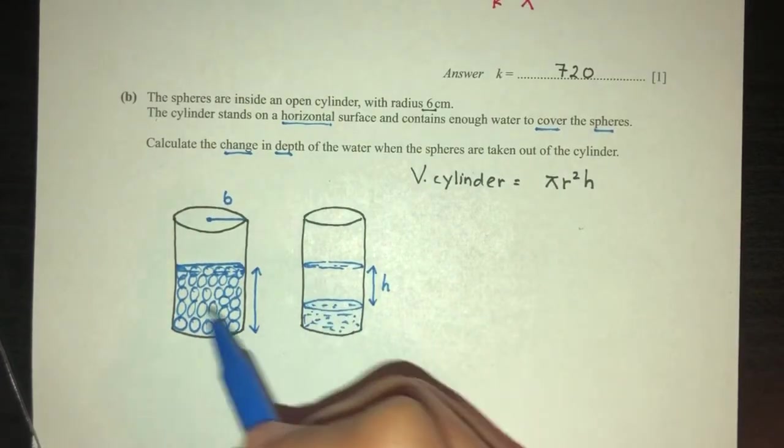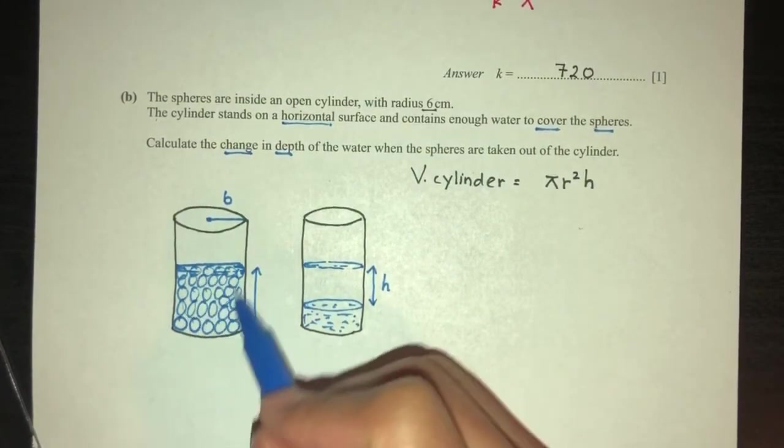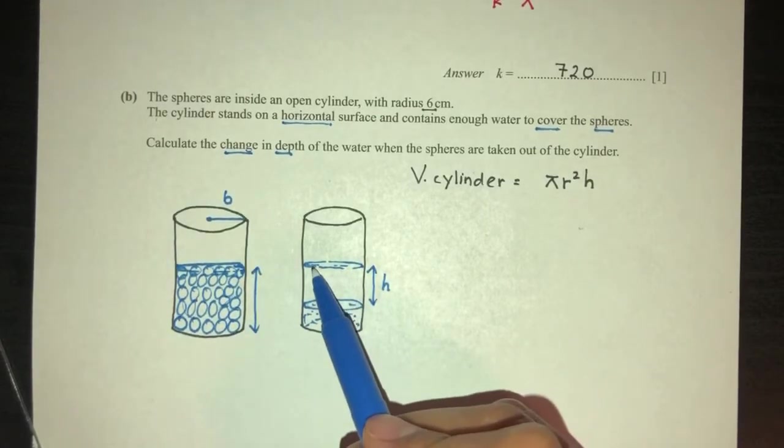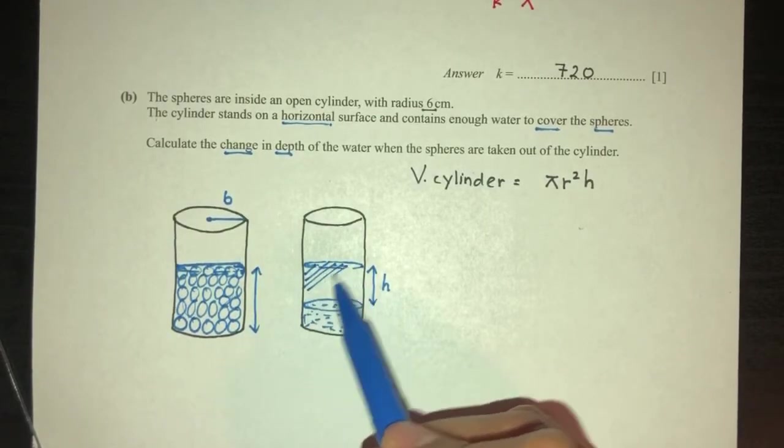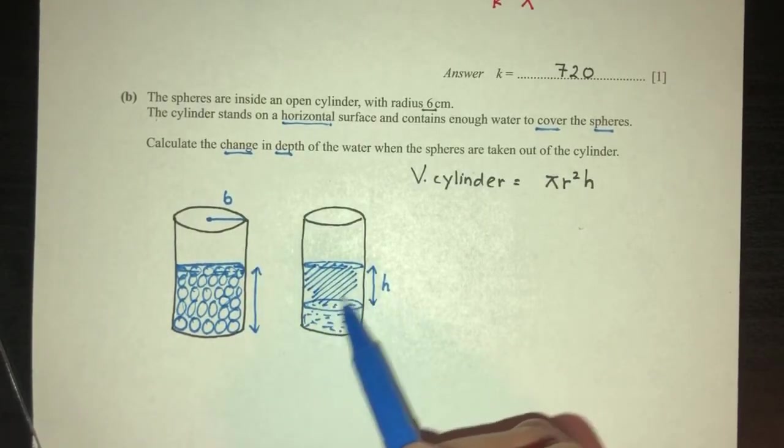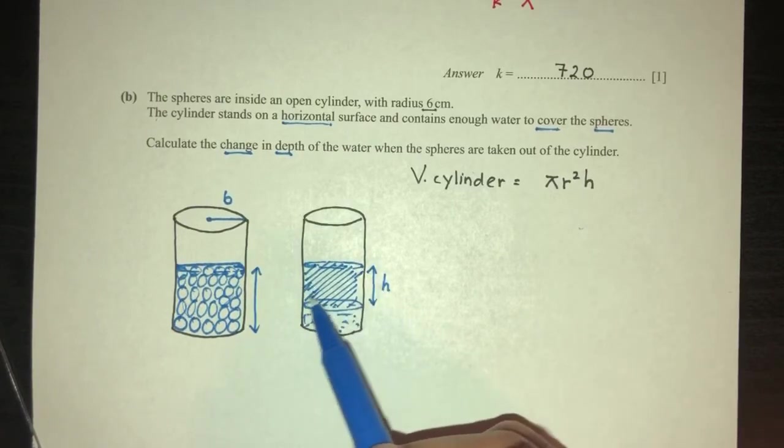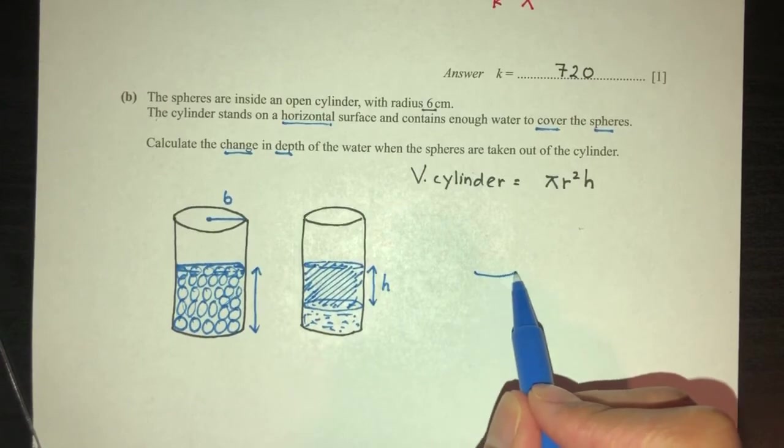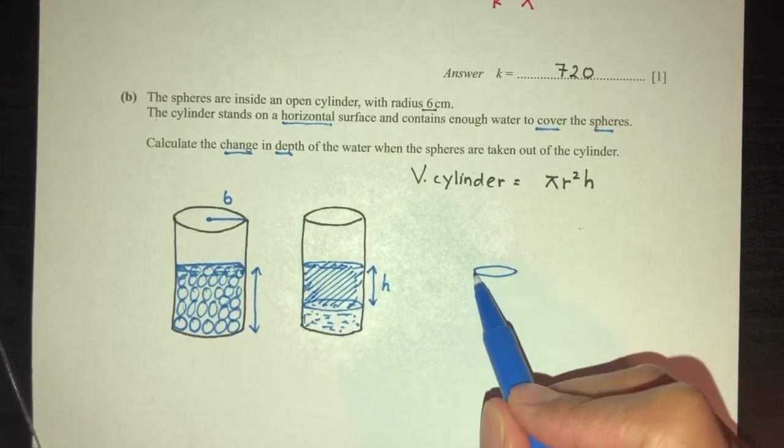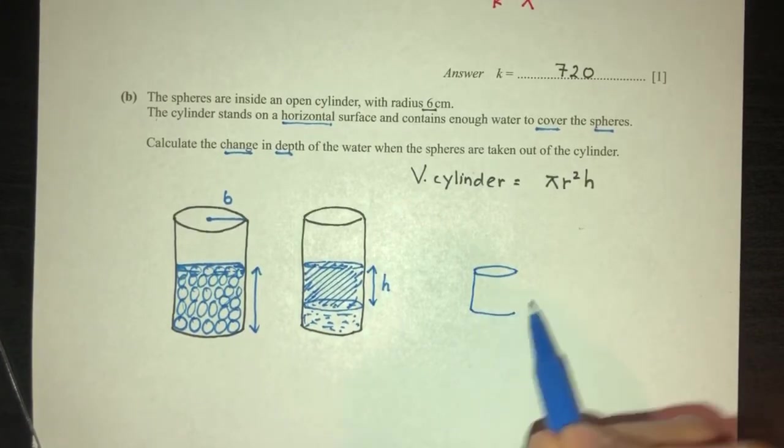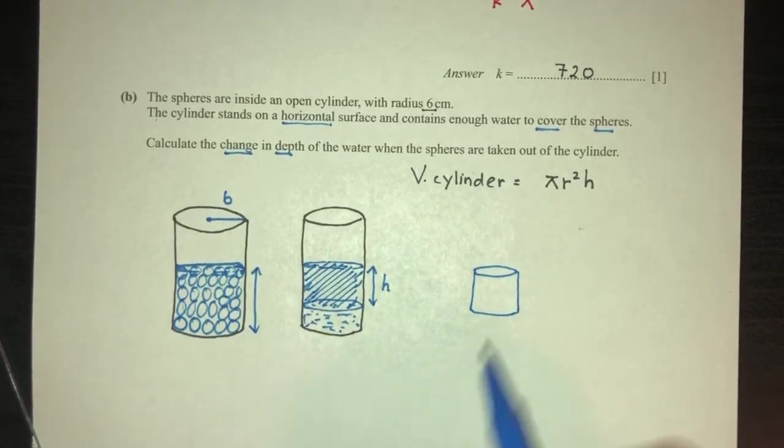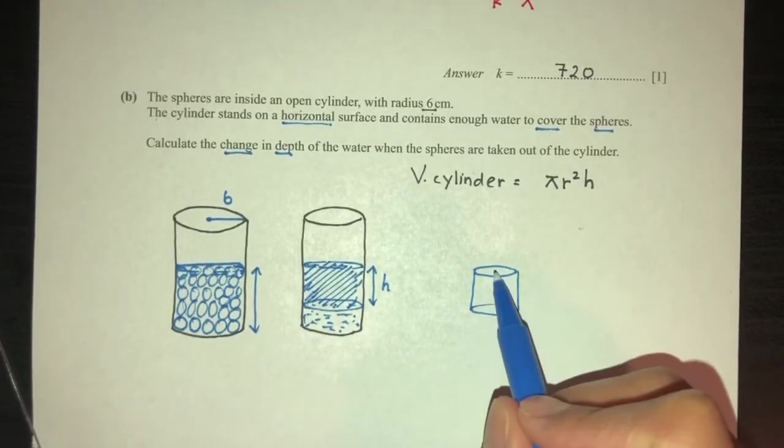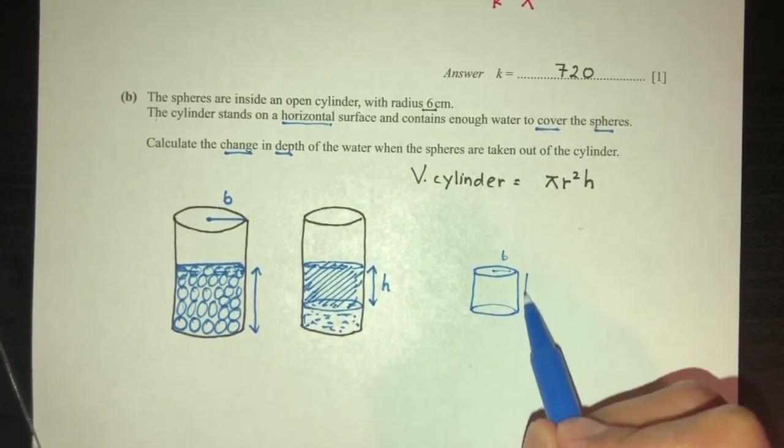When you take out the beads, the spheres, we lost that much volume. We lost this much volume. So, the volume we lost here is a cylinder. We lost that much volume, which is a cylinder, with radius 6 and height h.